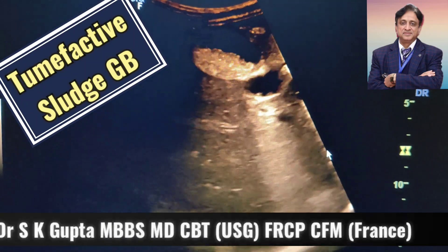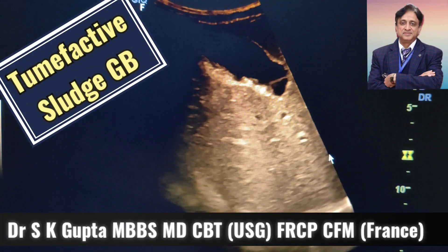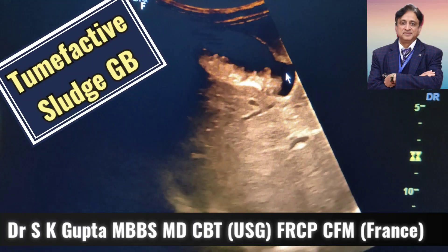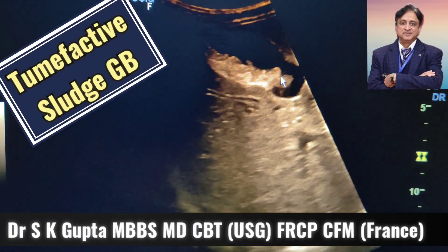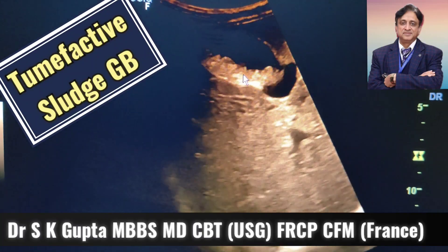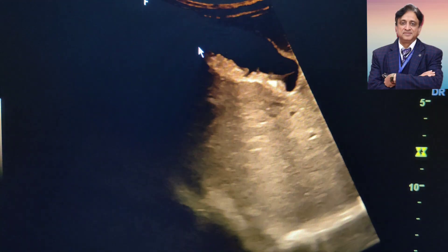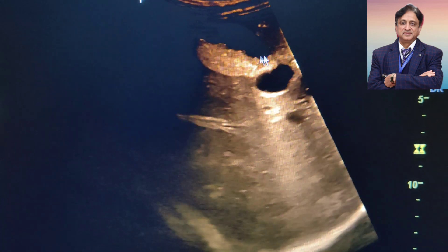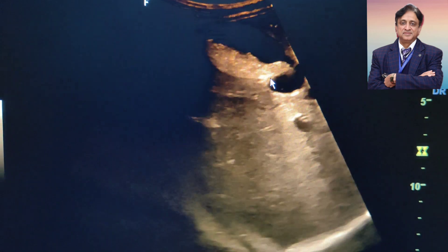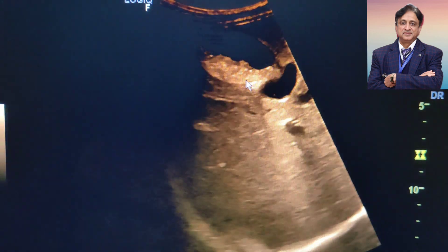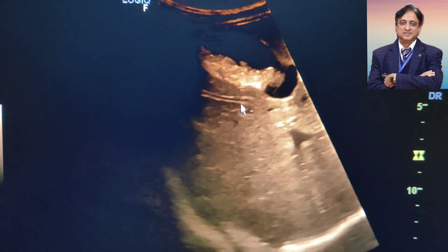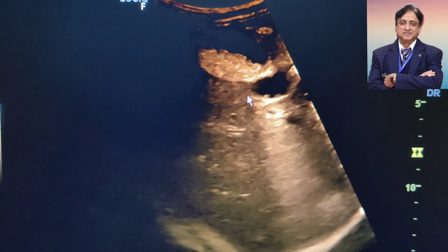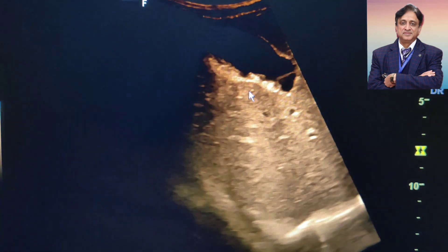Good day friends, I am Dr. A.S.K. Kukta and I am going to talk to you about the tumefactive sludge. This you can see is the gall bladder and inside the gall bladder you can see that there is an echogenic lesion, and this echogenic lesion is causing a diffuse shadowing all over here in the liver, and this is nothing but a tumefactive sludge.